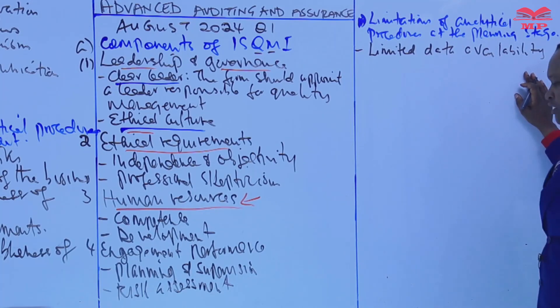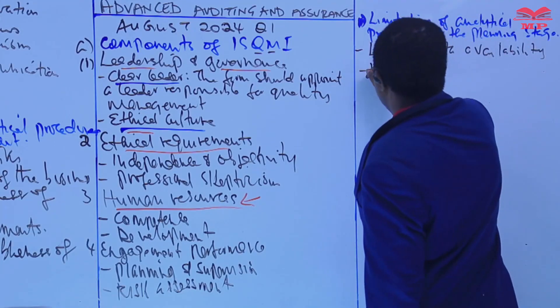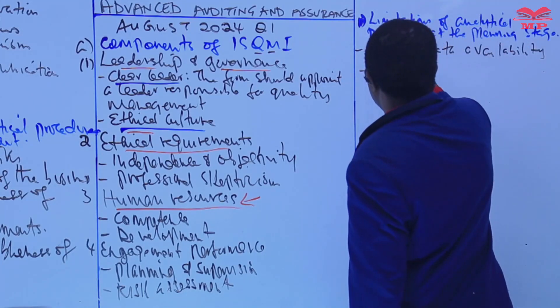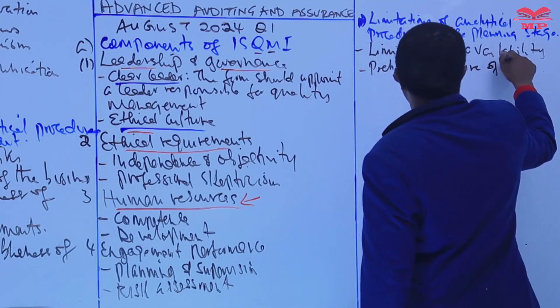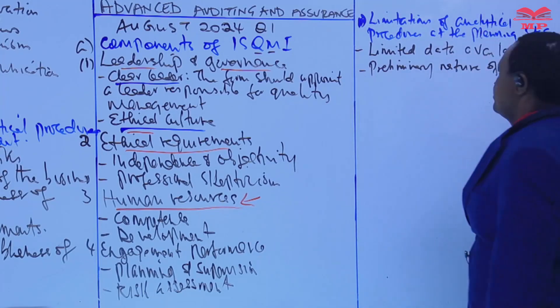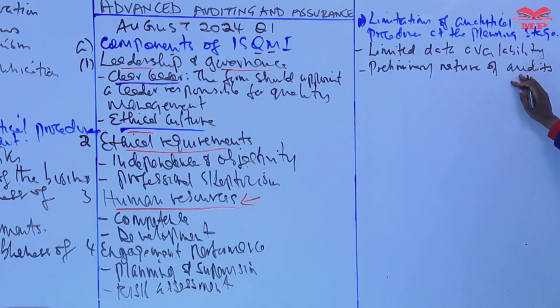Another limitation is the preliminary nature of audits. The audit at this stage is still in its preliminary stages, the planning stage. The auditor has not begun, he's only doing the planning, assessing the risk, allocating resources. The audit work has not begun.